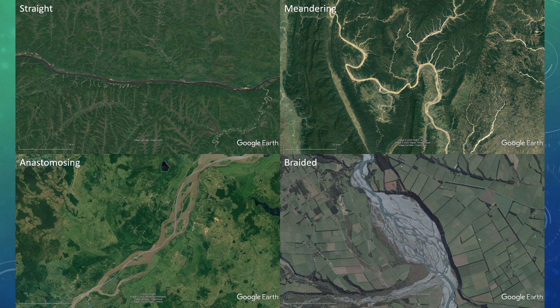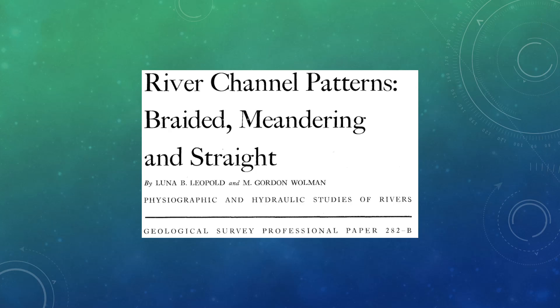To wrap up, in this video we learned about the four dominant channel forms and what drives their formation: straight, meandering, anastomosing, and braided rivers. If you're interested in more topics on channel form, this classic paper by Luna Leopold and Gordon Woolman in 1954 is a great place to start, though it takes a bit more of a technical look at how these systems form. I hope you enjoyed this video. Please stay tuned for more. Thank you very much. Have a good day.